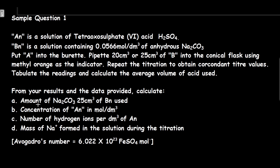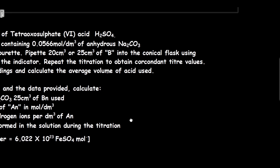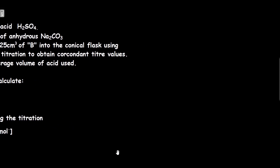Now from the question, it says calculate the amount of sodium triosal carbonate 4 in the 25 cm³ of B used. So here is how you calculate the amount of sodium carbonate in 25 cm³ of B.